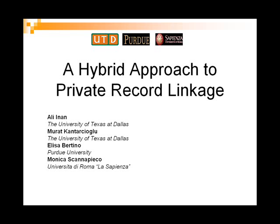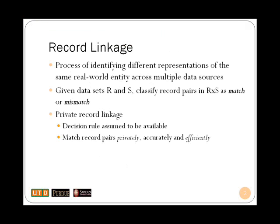The title of our paper is A Hybrid Approach to Private Record Linkage. The purpose of record linkage is identifying real-world entities represented differently across multiple data sources. Given two data sets R and S, our task is to classify record pairs in the Cartesian product as match or mismatch. When data records are private, the record linkage problem is referred to as private record linkage. In this modified version, the decision rule is assumed to be available and the main focus is on matching record pairs privately, accurately, and efficiently.